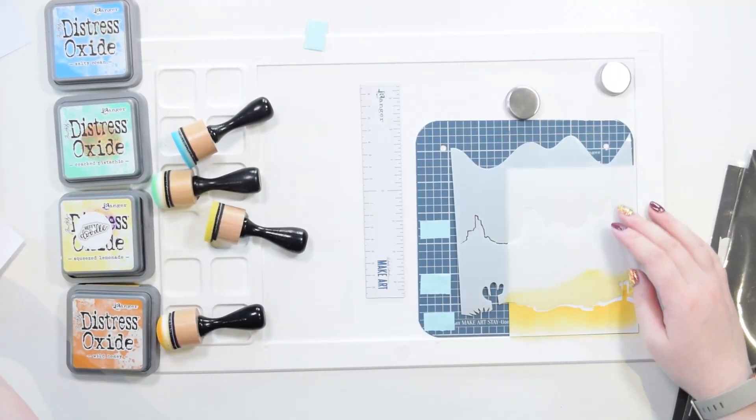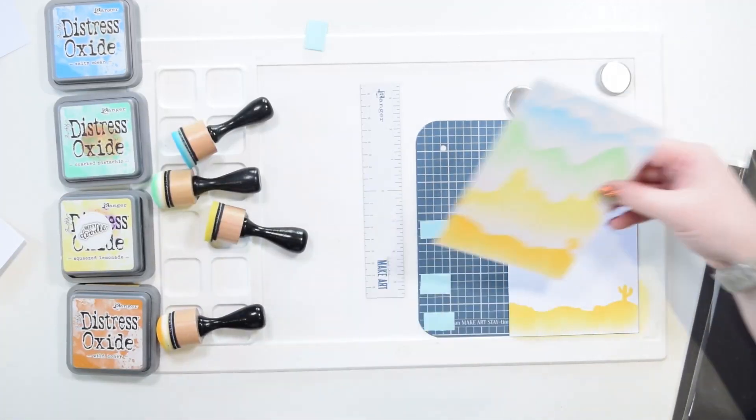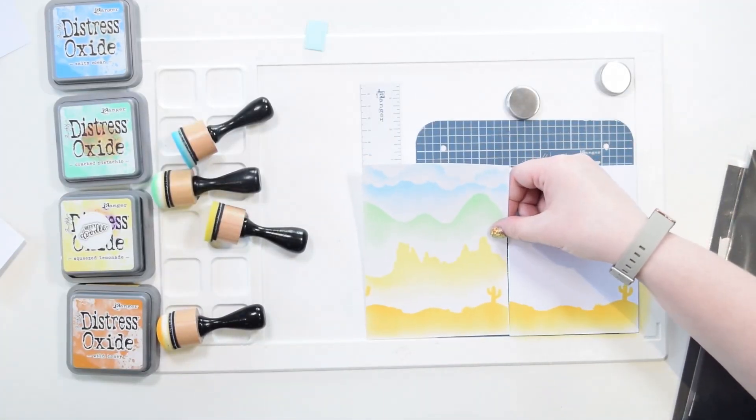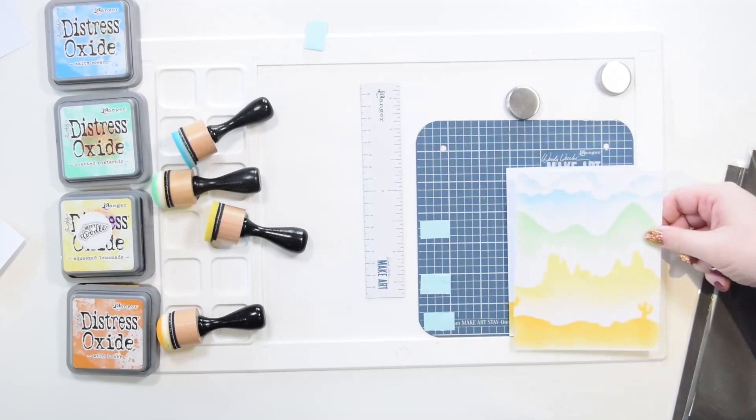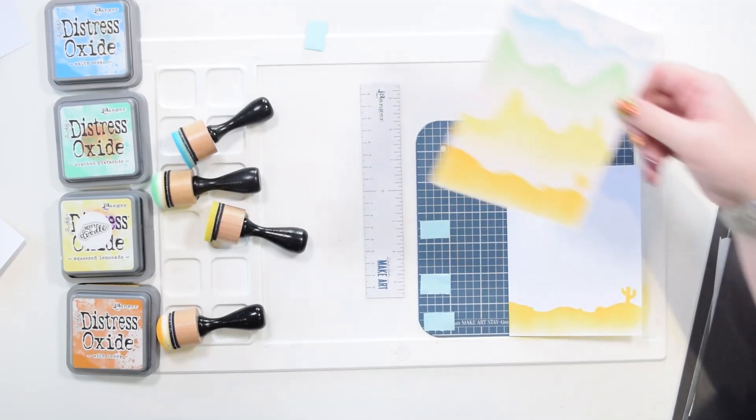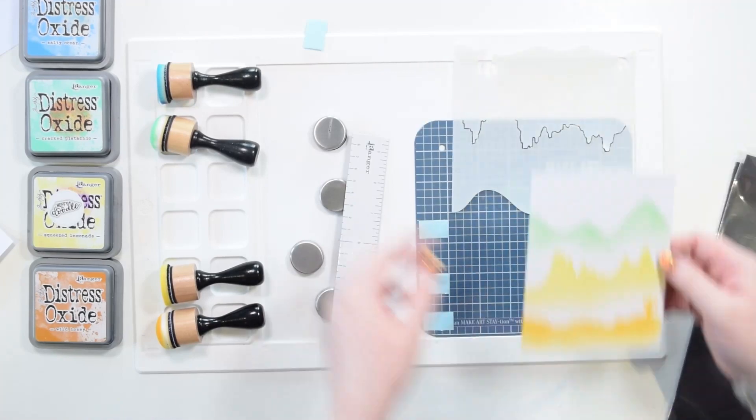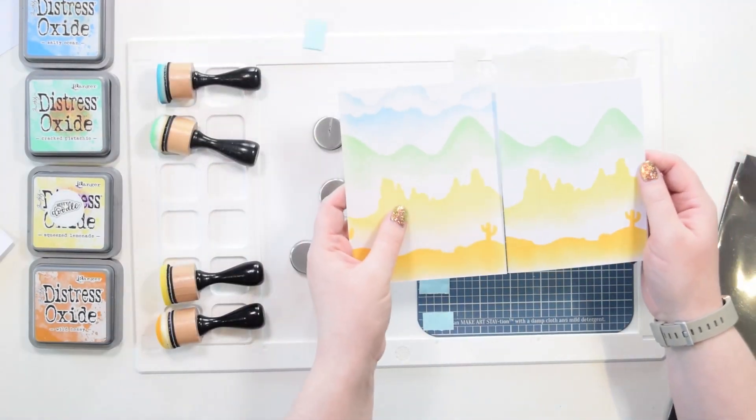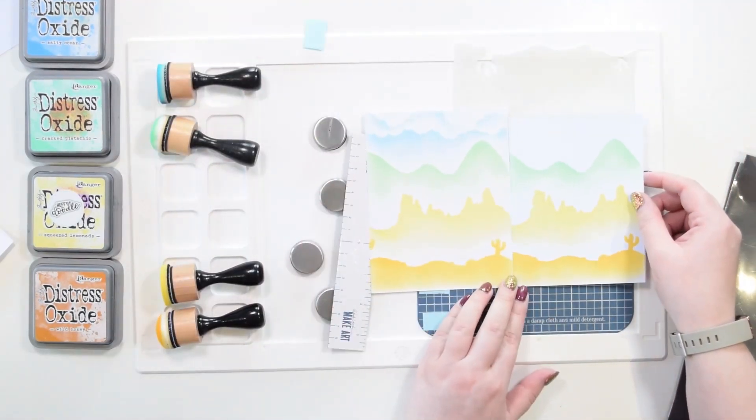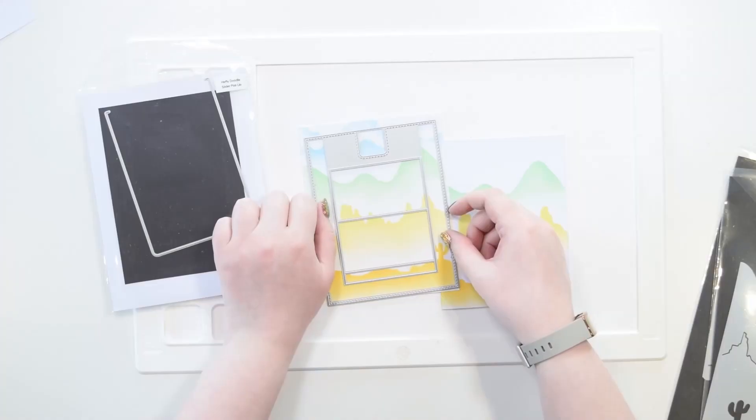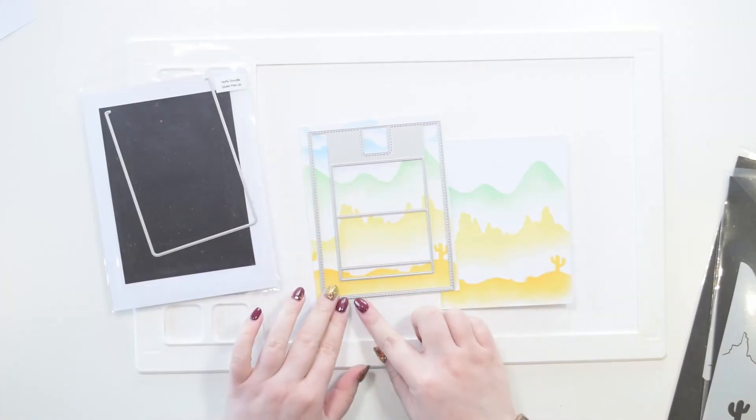I'm now gonna use a little bit of movie magic to make my card blank match the front panel of my card. Essentially all I've done here is repeated the ink blending process using the marks I've made on my Wendy Vecchi Make Art Station, using some memo tape to keep my lines matched up.